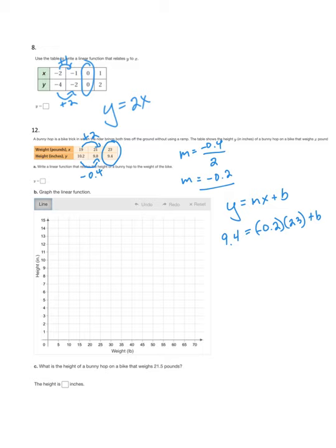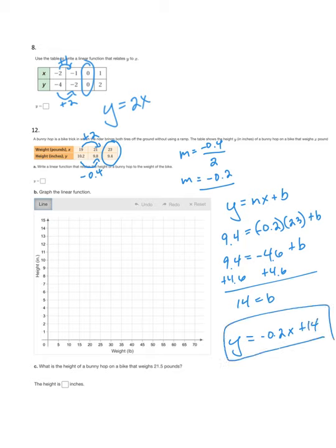Let me simplify that. 23 times 0.2 is 4.6, so I have 9.4 equals negative 4.6 plus b. I'll add 4.6 to each side, and I get 14 equals b. So my equation here is y equals negative 0.2x plus 14.